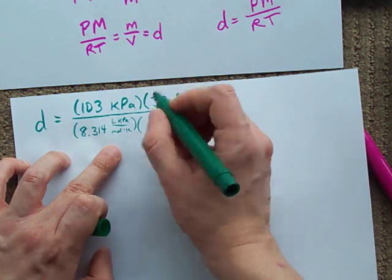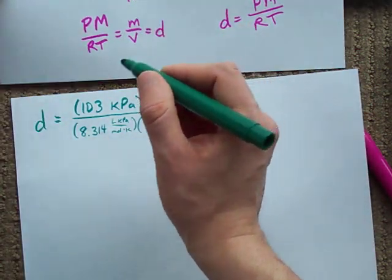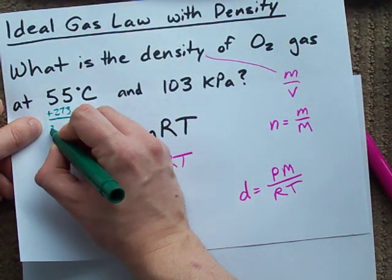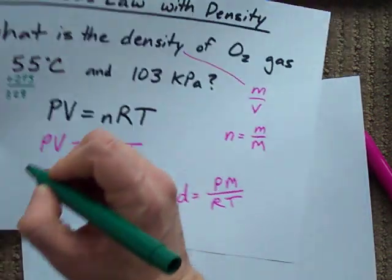And my temperature in Kelvin is the temperature in Celsius plus 273, which gives me 328 Kelvin.